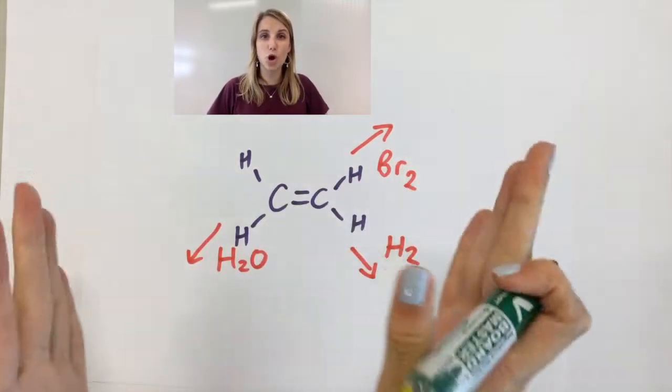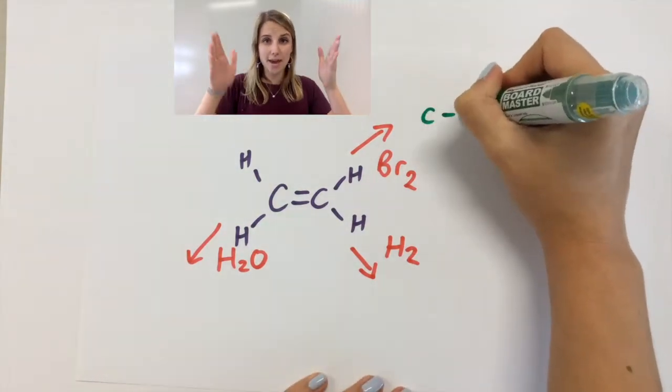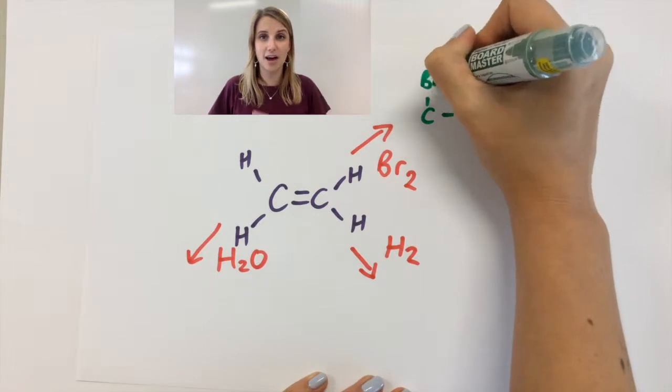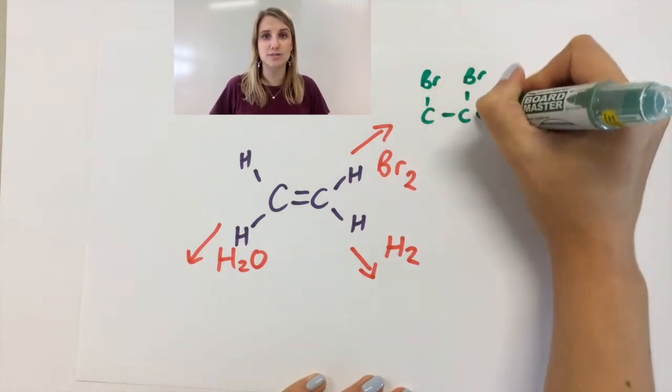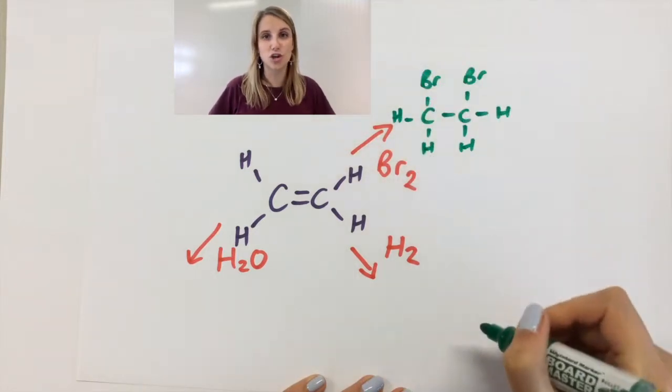So in the case of the bromine what happens is the double bond breaks and you get a Br adding on either side where the double bond used to be. Check each carbon still has four bonds and everything is all good.